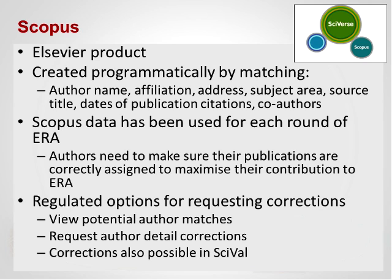Scopus author identifiers are an Elsevier product. Scopus profiles are created programmatically by matching criteria including the author name with their affiliation, address, subject area, source title, dates of publication, citations, and co-authors. Using myself as an example — although my name is distinctive — the programmatic matching in Scopus might not pick up that my publications as a marine biologist are by the same person who has published as a librarian. Scopus profiles are important because Scopus data has been used for each round of ERA. Authors therefore need to make sure their publications are correctly assigned to their name to maximise their institutional contribution to ERA. Scopus provides regulated options for requesting corrections.